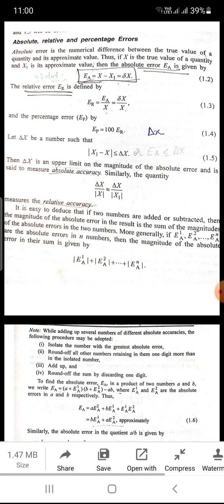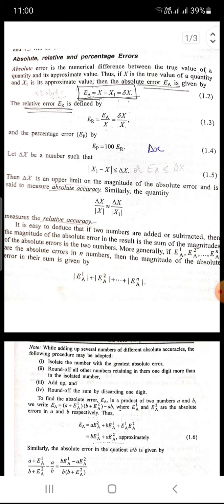That is, mod of xi minus x will be less than or equal to delta x. Then delta x is an upper limit on the magnitude of the absolute error and is used to measure absolute accuracy.